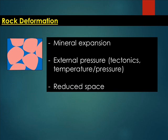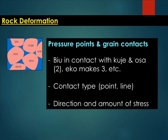In the case of increasing pressure or mineral expansion, you're going to have reduced space. Suppose we have these six grains — let's assume each grain is an individual, all occupying a room. We have different sizes of individuals here, some big and some smaller in size. You'll notice a number of contacts or pressure points. For example, one individual is in contact with two others, making two contacts, while another has three contacts and so on.